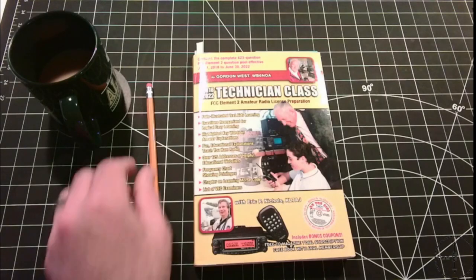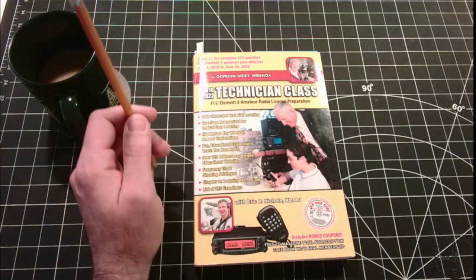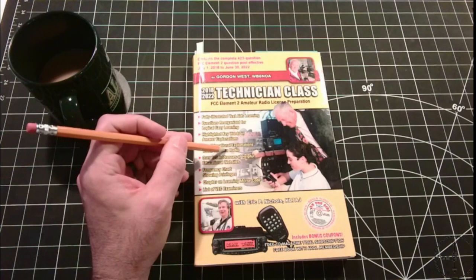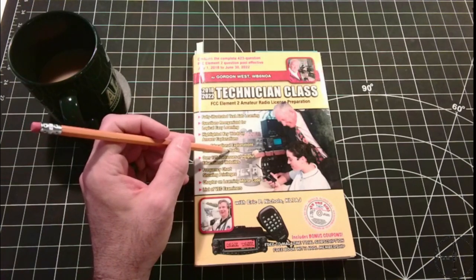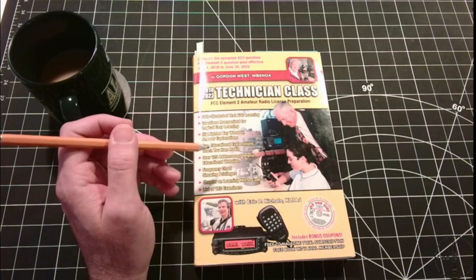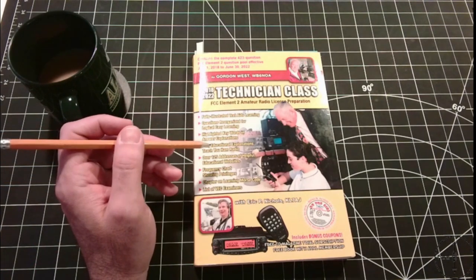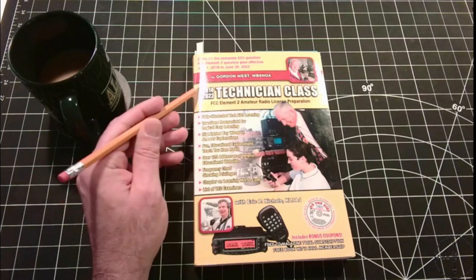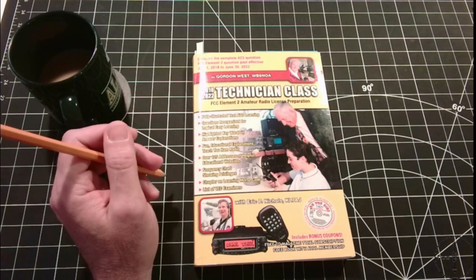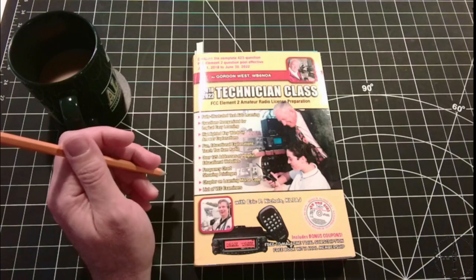When I was studying for my element 2 exam, I discovered the Gordon West study guide. I looked at a few others and settled on this one because it does a great job of explaining the subject matter in simple terms. This one I'm showing you is an outdated copy for the question pool from 2018 to 2022, but I'll leave a link to the latest one in the description below.